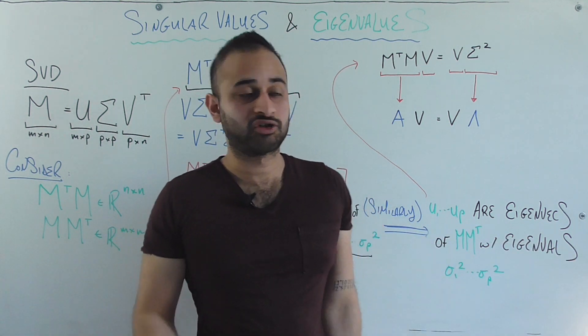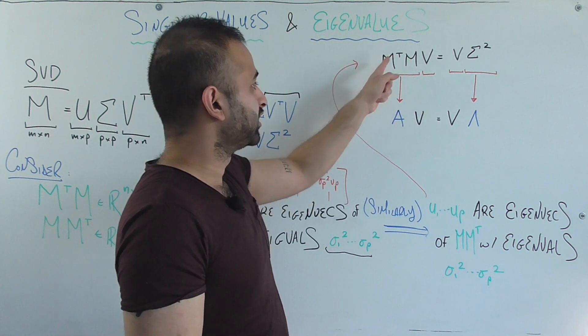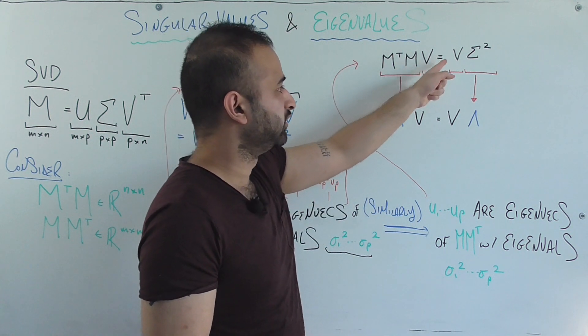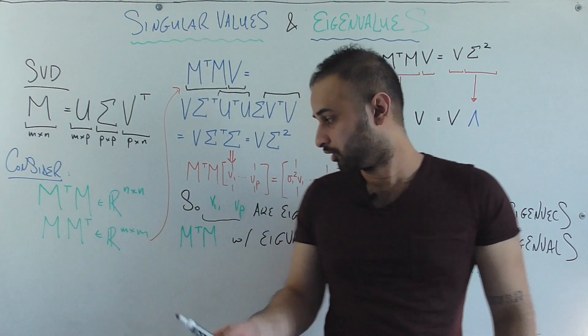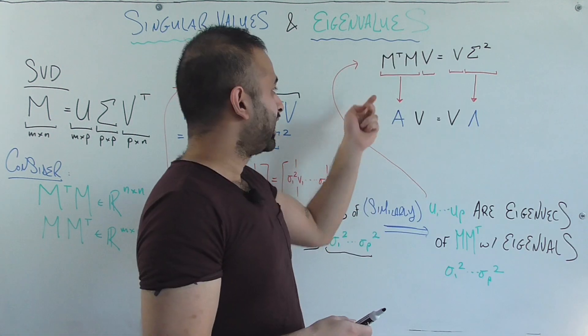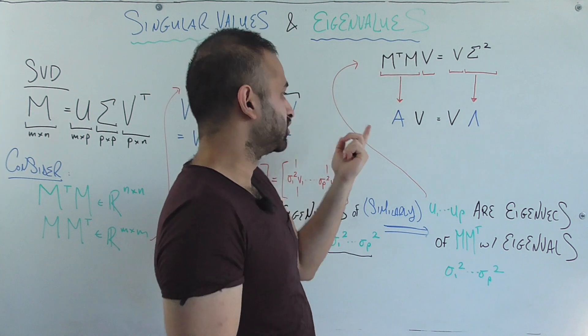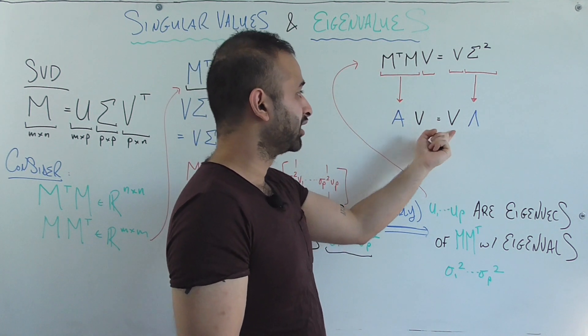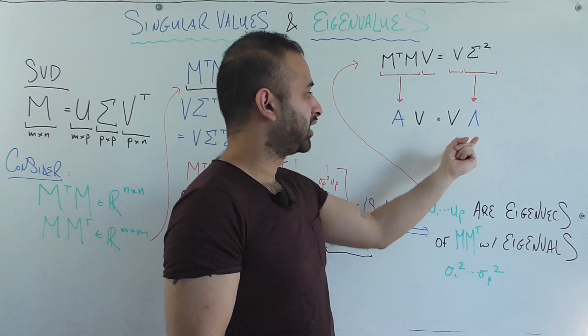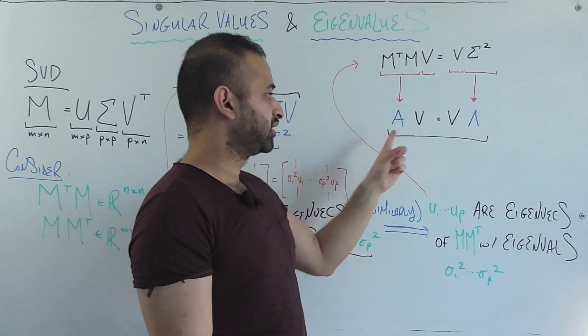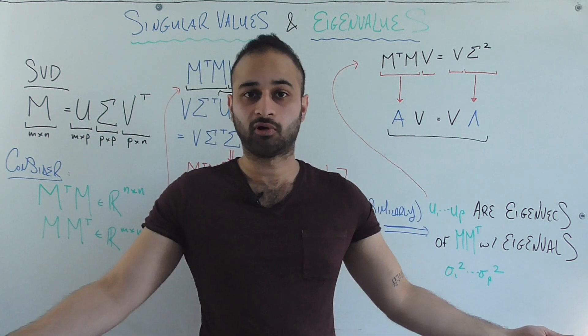And to finish this video, let's just look at this in a matrix form. So we know that M transpose M times V is equal to V times sigma squared. That's literally what we derived right here. So now if we just give these guys separate names, we can call M transpose M just A, V we'll just keep calling V, and let's call sigma squared as lambda. Now we get back the same exact form as the eigen decomposition that we looked at before.